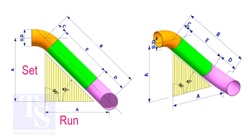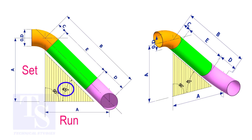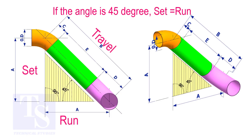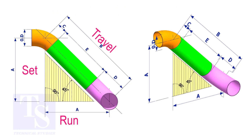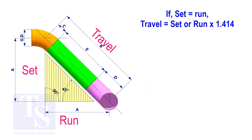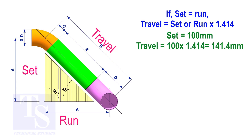In an offset, if the included angle is 45 degrees, the set and the run shall be the same. If the value of the set and the run are equal, the value of the travel is the set or the run multiplied by 1.414. Assume that the value of the set is 100. The value of the travel is 100 multiplied by 1.414, which equals 141.4.